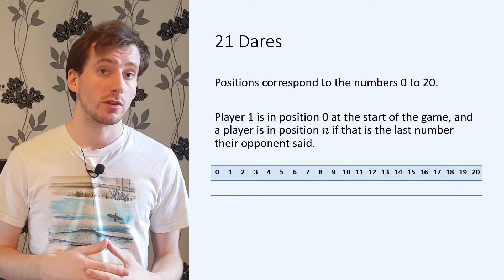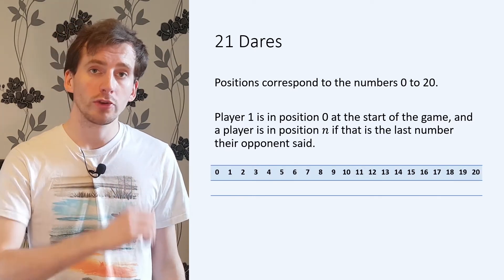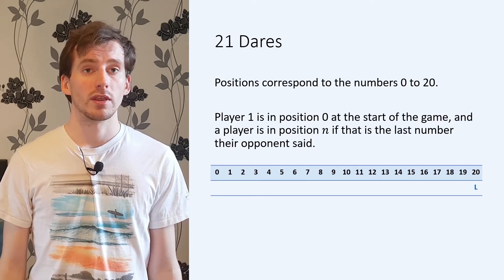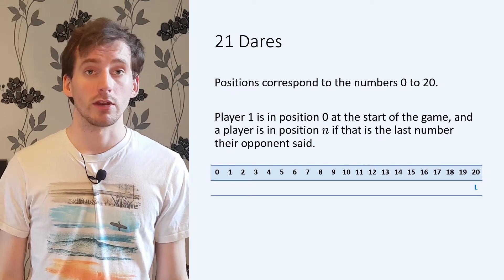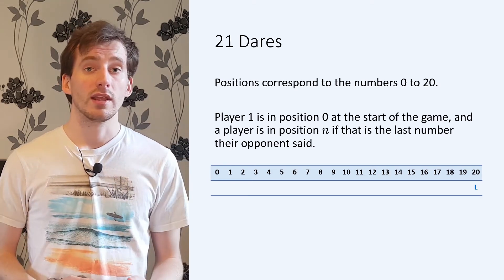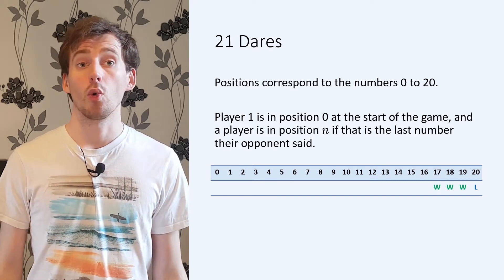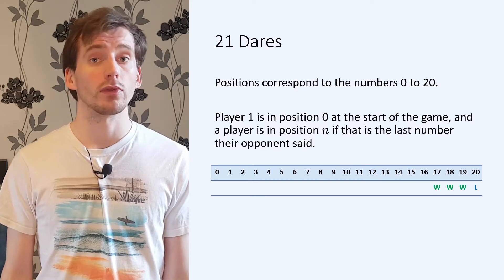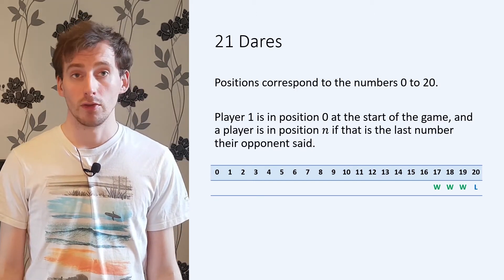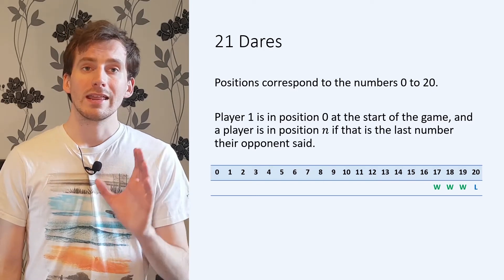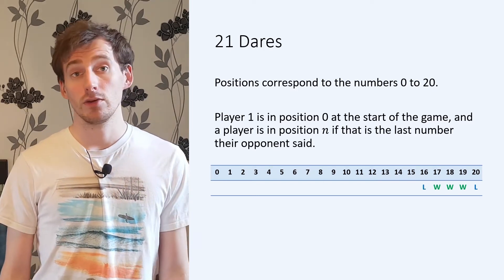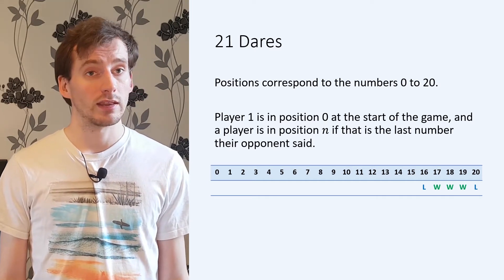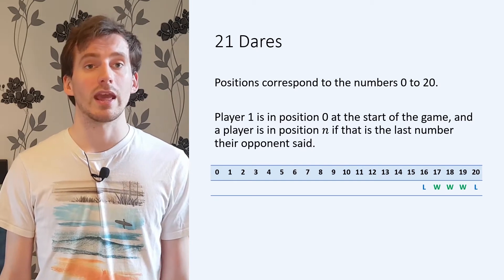What are the losing positions for 21 Dares? Well, there's only one final losing position: position 20. If either player ends up in position 20, they must say 21 on their next turn and lose. Working backwards, positions 17, 18 and 19 are all winning positions, because the player in these positions can count up 3, 2 or 1 numbers and leave their opponent in the losing position. Next, notice that position 16 is a losing position, because if a player is in this position they must count up to 17, 18 or 19 and so leave their opponent in a winning position.